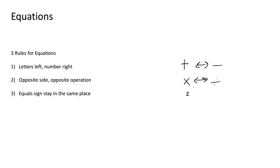And if you square something, the opposite of squaring is square root — but you should hopefully know that from changing the subject. And then the last rule: the equal sign stays in the same place. This is purely for keeping your working neat.